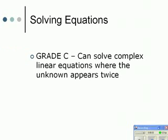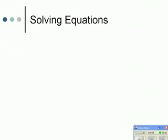Solving Equations Part 3. For these we're going to solve grade C questions where the unknown appears twice. In this question you can see the unknown is x and it appears on both sides of the equal sign.